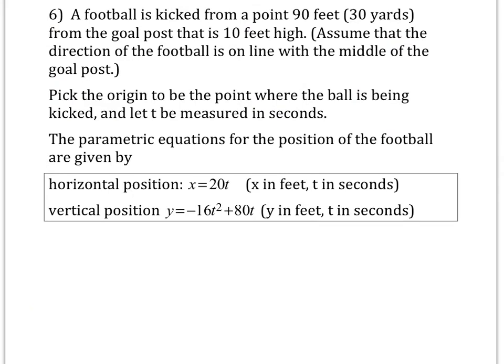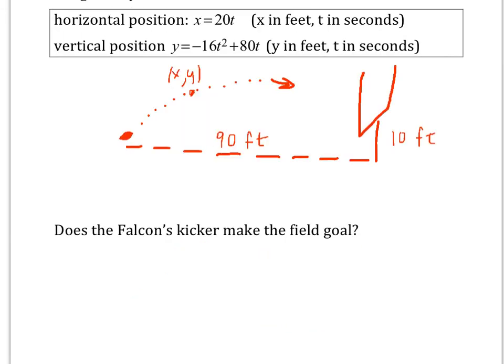We'll get to trigonometric functions in just a second. But let's do one more. This is an especially painful word problem, especially since the Seahawks just lost. But you have a football that's kicked from a point 90 feet away from a goal post that's 10 feet high. And we're assuming that the ball is kicked so it hits the middle of the goal post. So it's online. And the origin would be where the ball is being kicked. And here become the parametric equations for the football as it's headed towards the goal post.